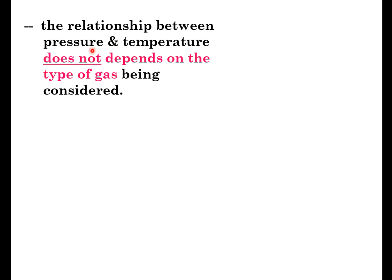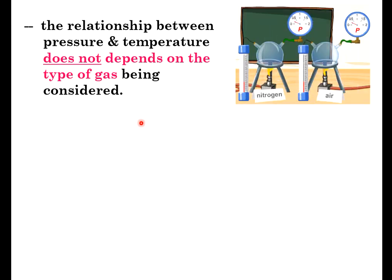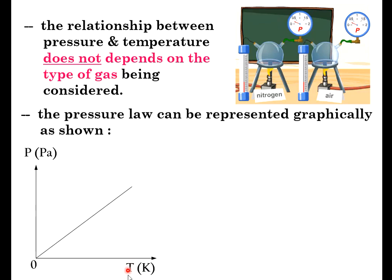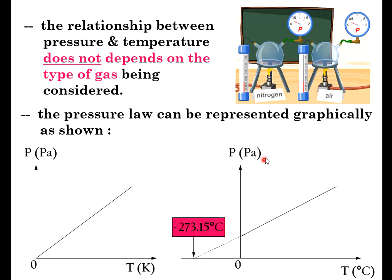The relationship between pressure and temperature does not depend on the type of gas being used - it doesn't matter whether it's an inert gas or a normal gas, nitrogen or air. The pressure law can be represented graphically as pressure in Pascal versus temperature in Kelvin, giving a directly proportionate graph. But if pressure is in Pascal and temperature is in degrees Celsius, the graph will be a linearly increasing graph with an x-intercept at absolute zero, which is negative 273 degrees Celsius or zero Kelvin.